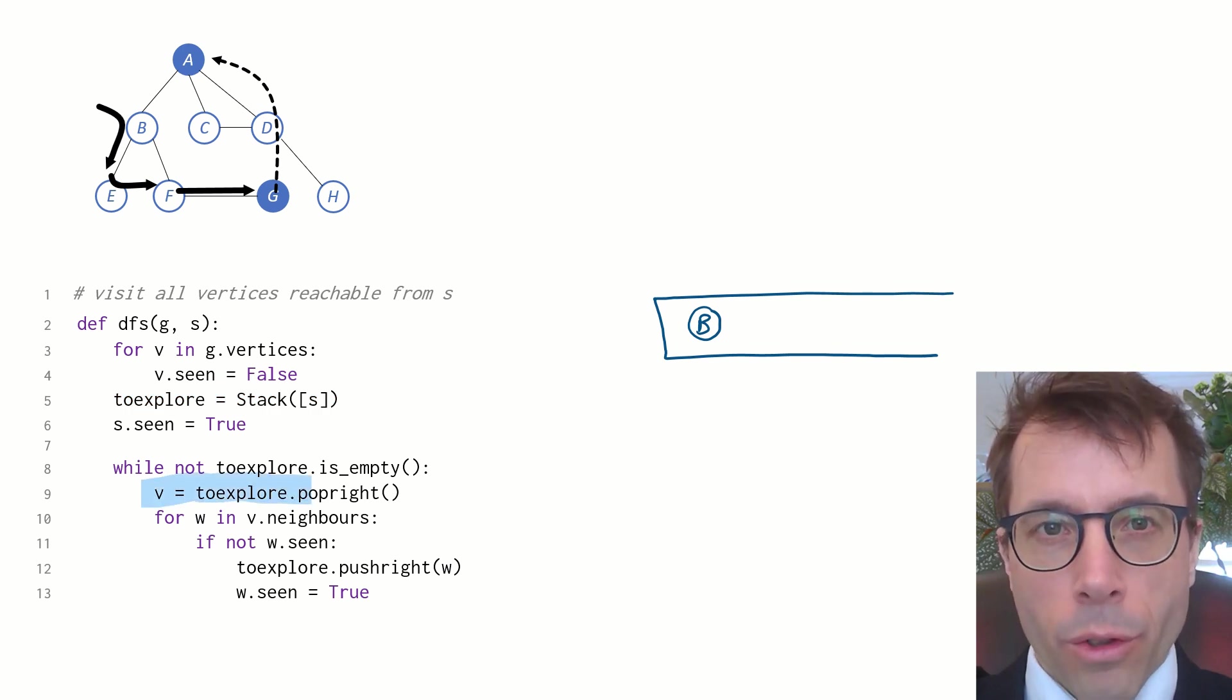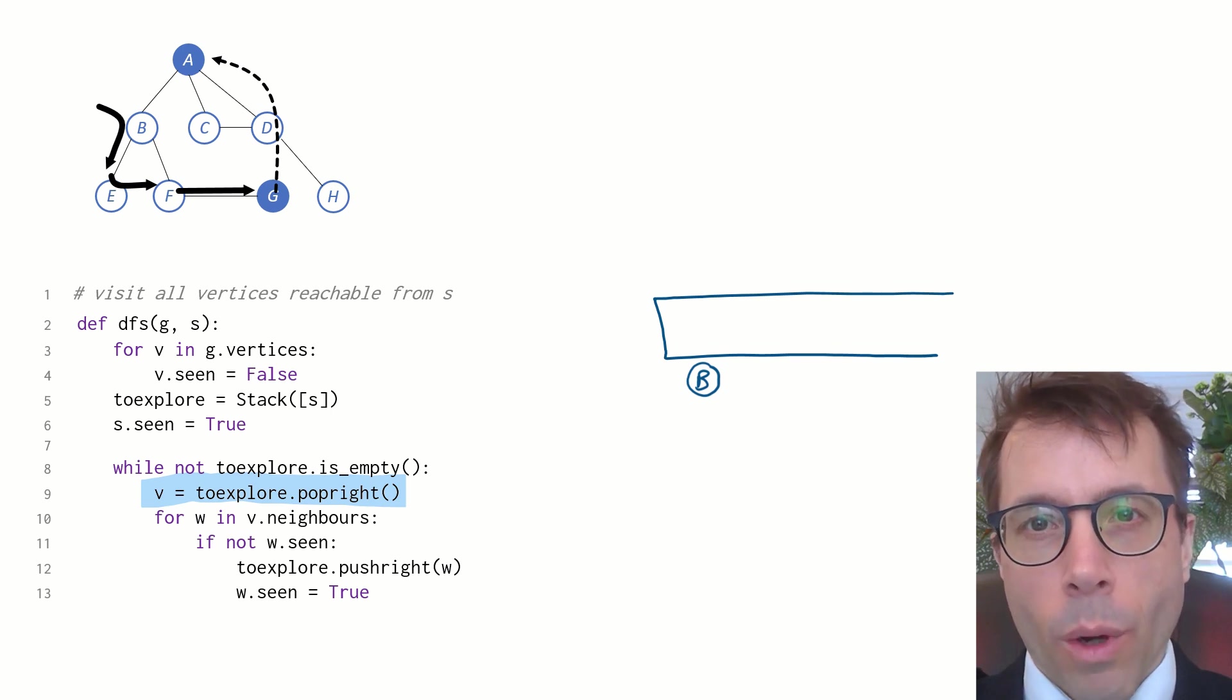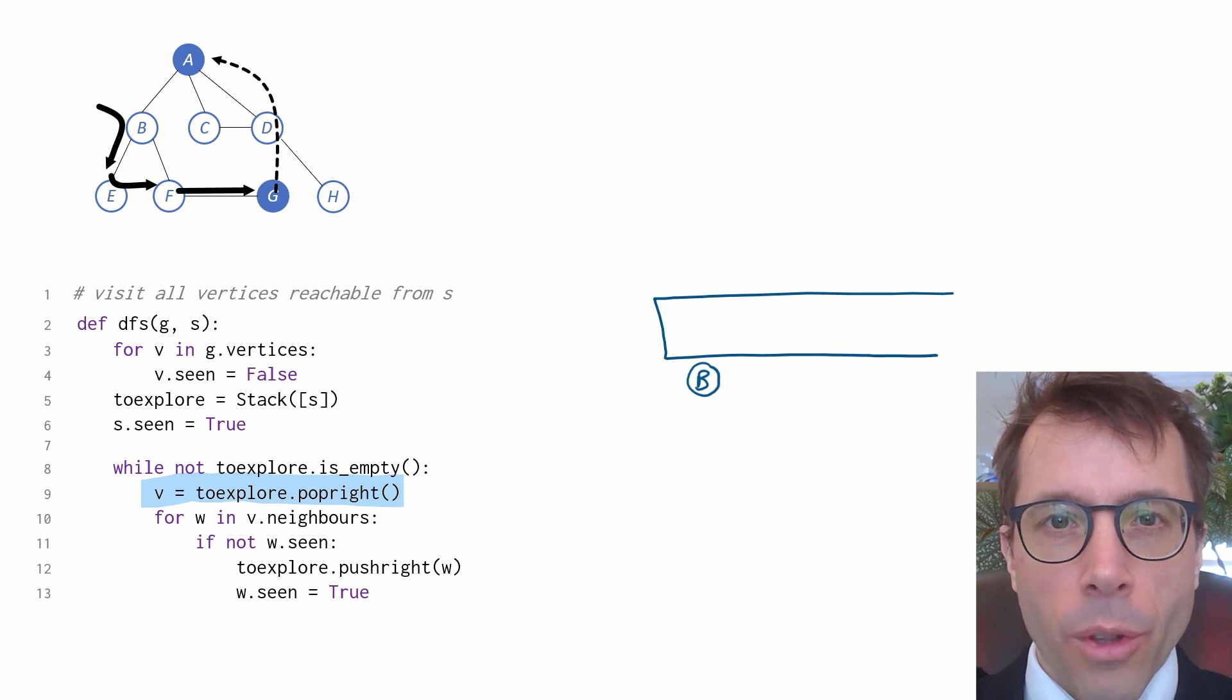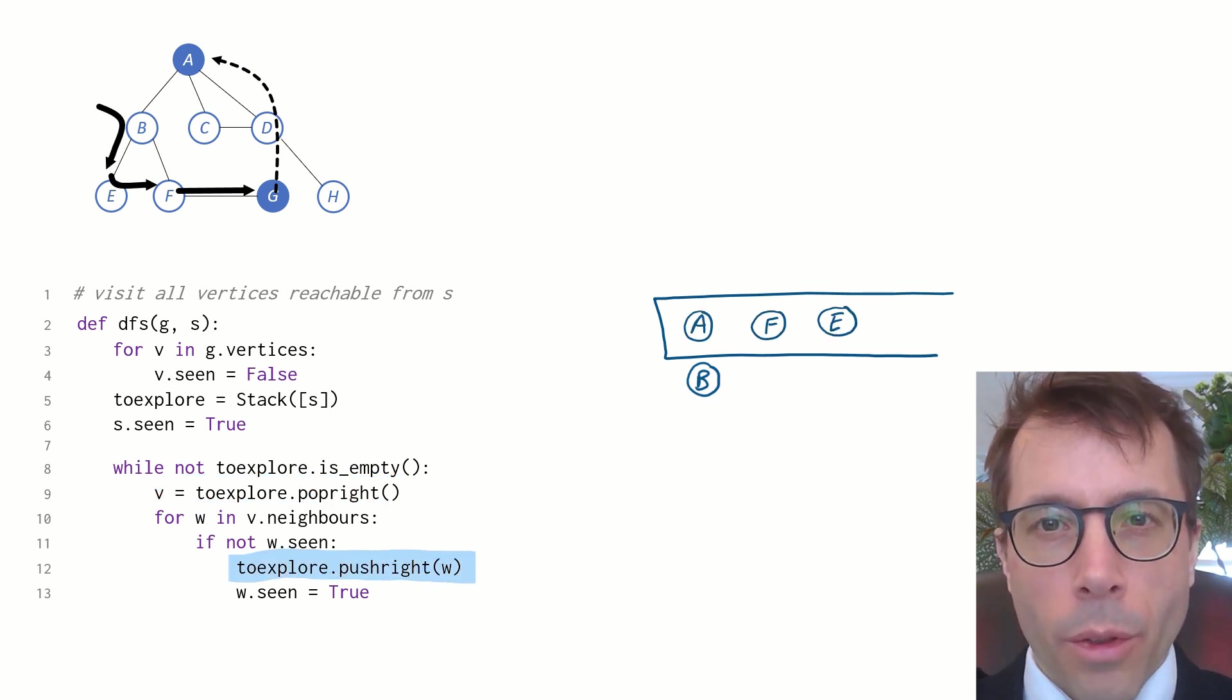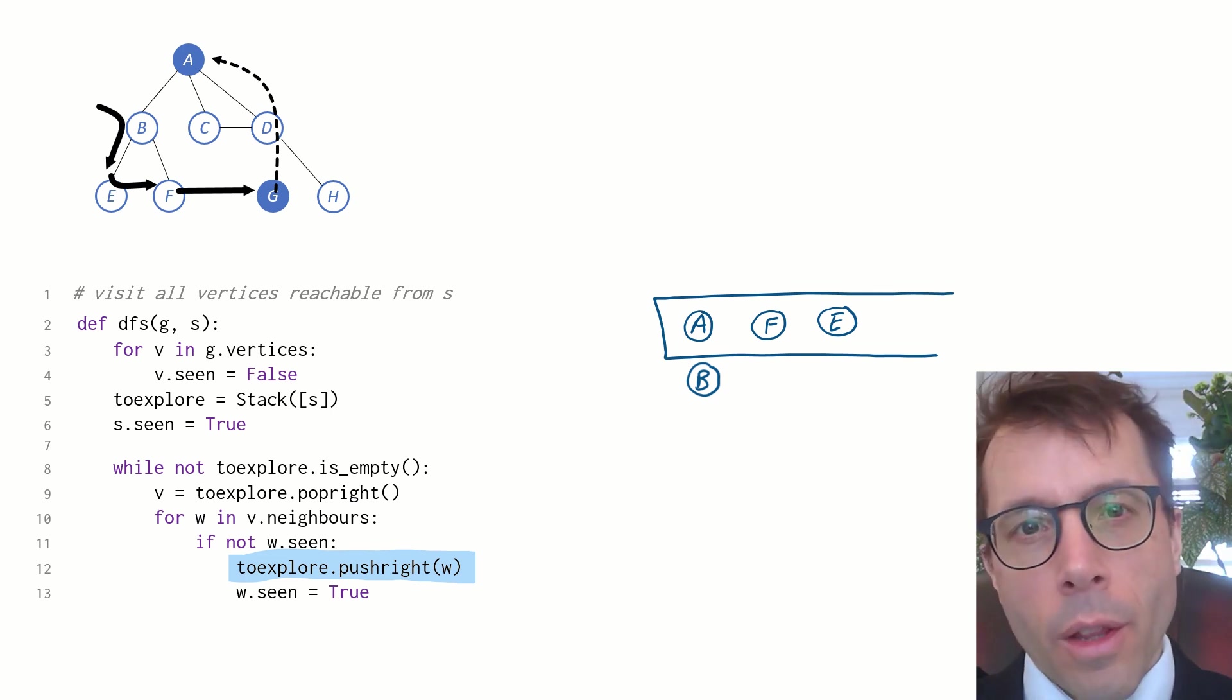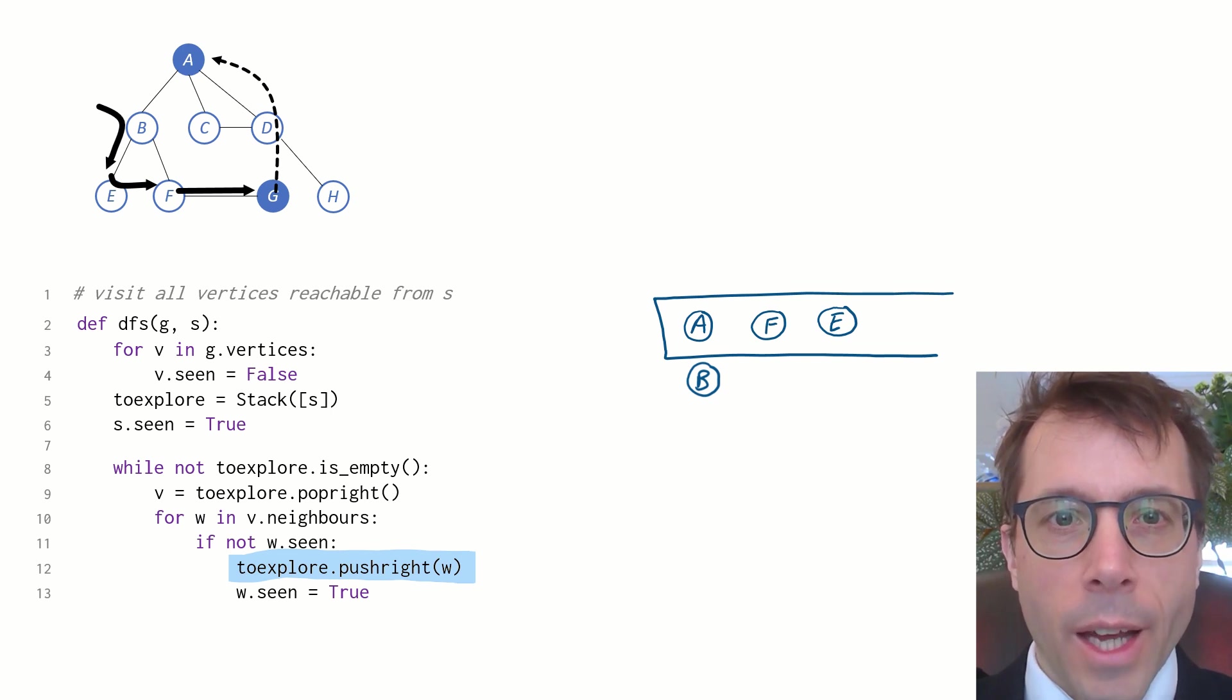And the way the exploration works is, it pops off the rightmost vertex. Here there's only one vertex, B, and so it's of course the rightmost. We scan through all of B's neighbours, and we add them to the stack, pushing them on the right. B has three neighbours. In graphs, there's no particular order to a vertex's neighbours, and here they happen to be stored in the order A, F, E. OK, done with B. Next iteration.